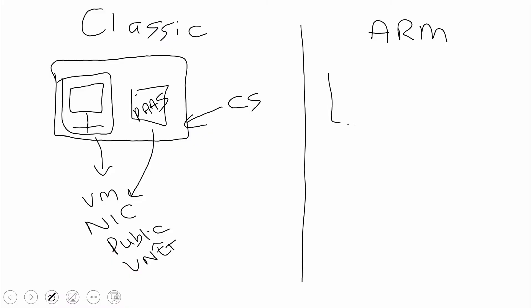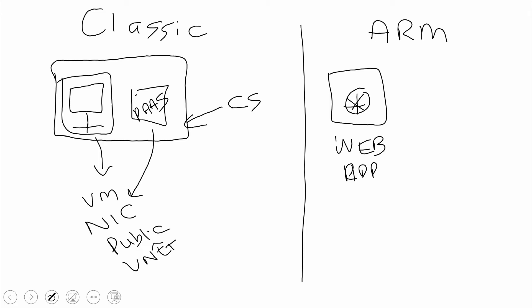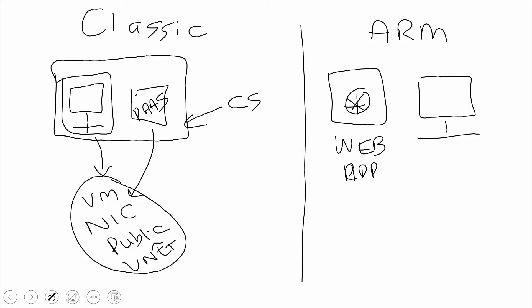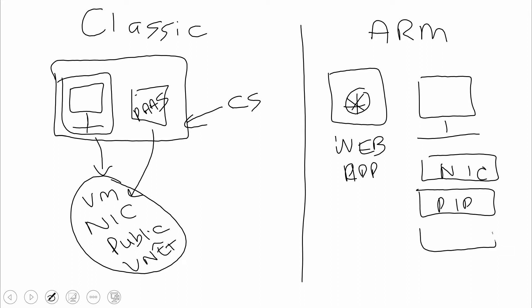In the ARM model, the new deployment model, one of the first things to come through was the web app — it used to be called a website. Under ARM we have web apps, mobile apps, API apps, all the different PaaS services including Service Fabric. We also still have IaaS virtual machines. The nice thing about ARM is it allows us to be more flexible. All those tightly coupled pieces are now individual components — each one is like a box. We have our NIC, our public IP, and so on. All these pieces are like Legos that we can put together in different models.